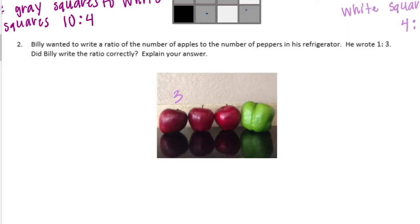If we look at this picture, we have three apples and one pepper. So if we wrote this ratio, it's asking the ratio for the number of apples to the number of peppers. So the apples must go first. So three to one.